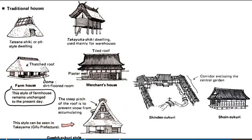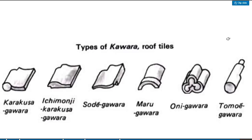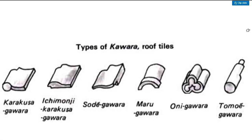Construction and materials in Japanese traditional houses. Roof styles include irimuya, kirizuma, hogyo, and yosemune. Types of roof include plant material roofs, metal roofs, tiled roofs, and roofs made of wooden boards weighted down with rocks. Types of roof tiles in Japan — called kawara — include Karakusa-gawara, Ichimonji, Sodigawara, Marugawara, Onigawara, and Tomoegawara.